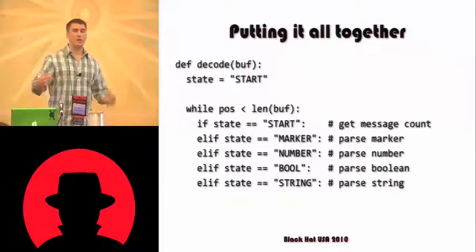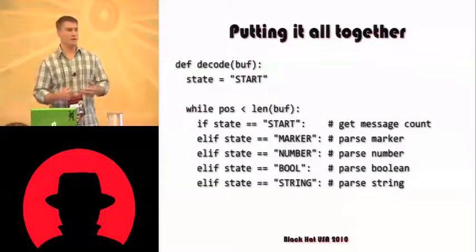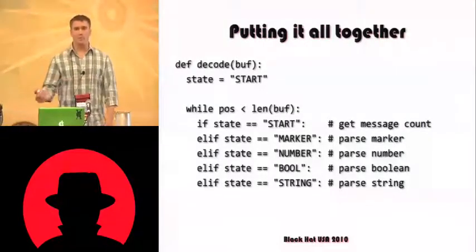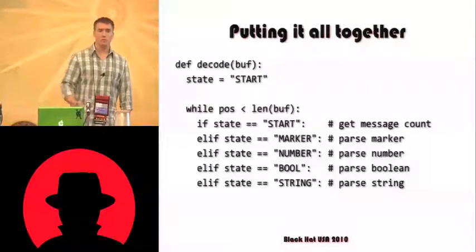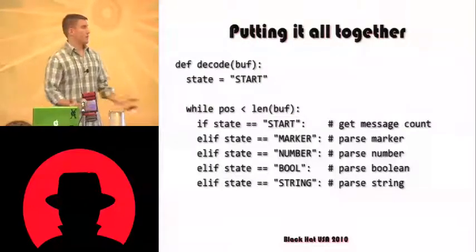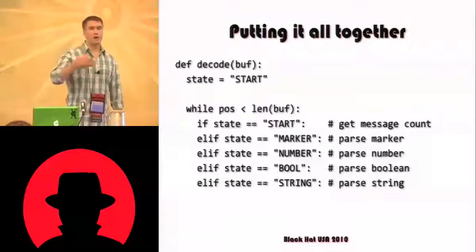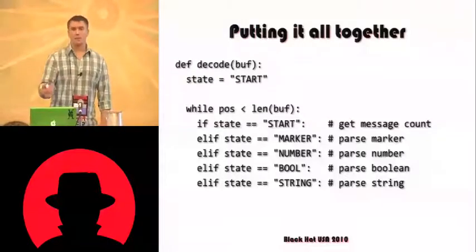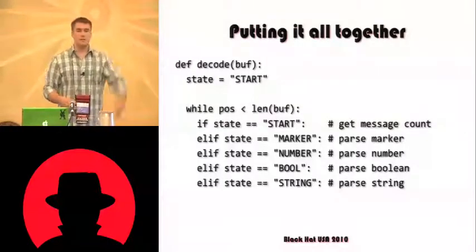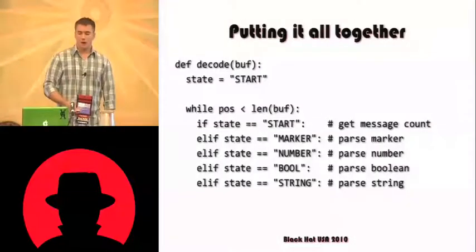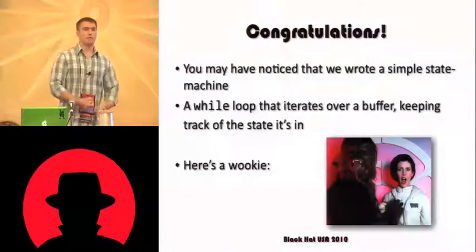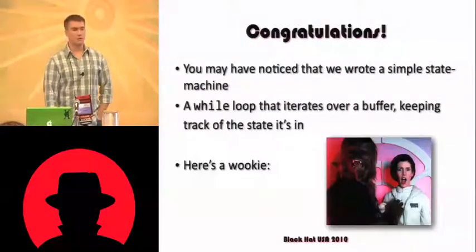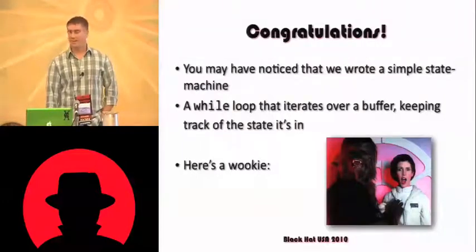When you create all these methods for parsing Booleans, numbers, strings, and other more complex objects that your binary protocol implements, this is what it ends up looking like. You iterate over every byte in the stream, and based on the type marker you encounter, you do the associated protocol parsing. What you've just created is a simple state machine. Writing a protocol parser is a lot easier than it sounds.